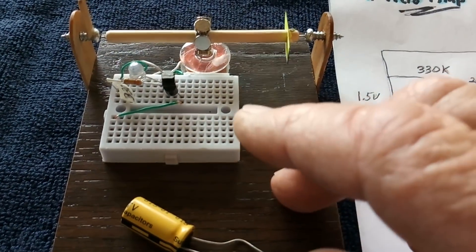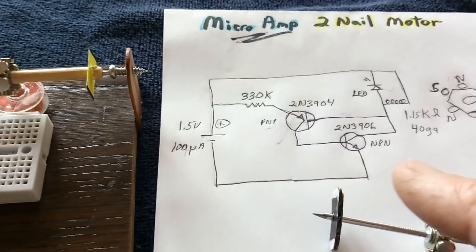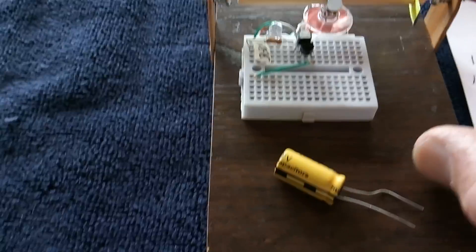Again, it's 100 microamps on a 1.5 volt source. You do the math and you see how long that would run on a AA battery, but check this out.